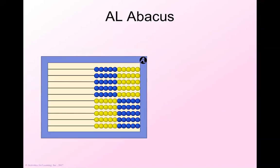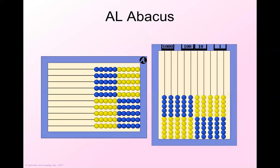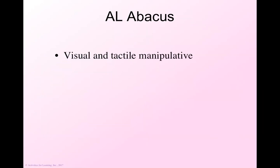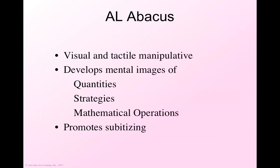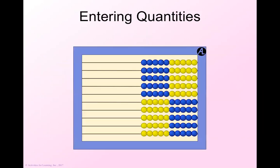Another thing that we're going to use is the AL abacus. There are abacuses all over the world. Abacus just means beads on a frame. All different types of abacuses exist. The beads can represent different quantities and they're used different ways. But we're going to look at the AL abacus that was designed specifically for introducing arithmetic concepts to children. As far as I know, the AL abacus is the only abacus that has two sides. Here's what it looks like. It's a visual and tactile manipulative.